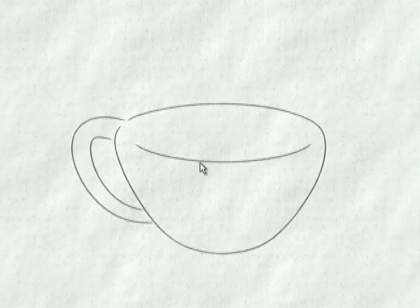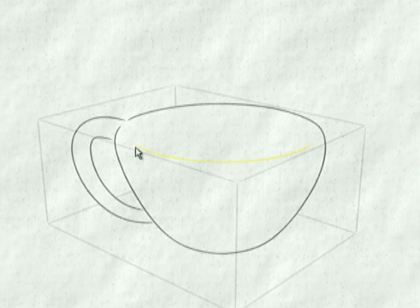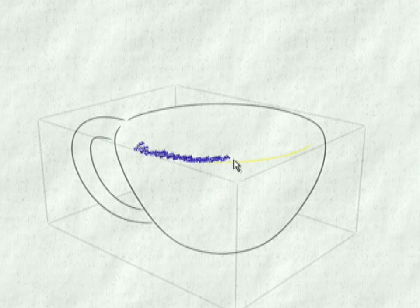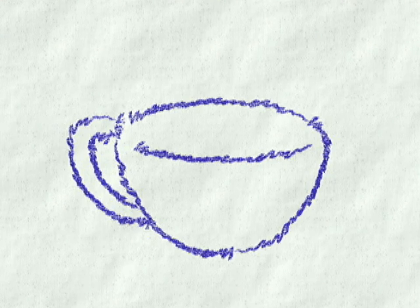By automating the processes of repainting the designer's style frame by frame, media like crayon or pastel, generally too cumbersome to animate by hand, come to life smoothly for the first time.